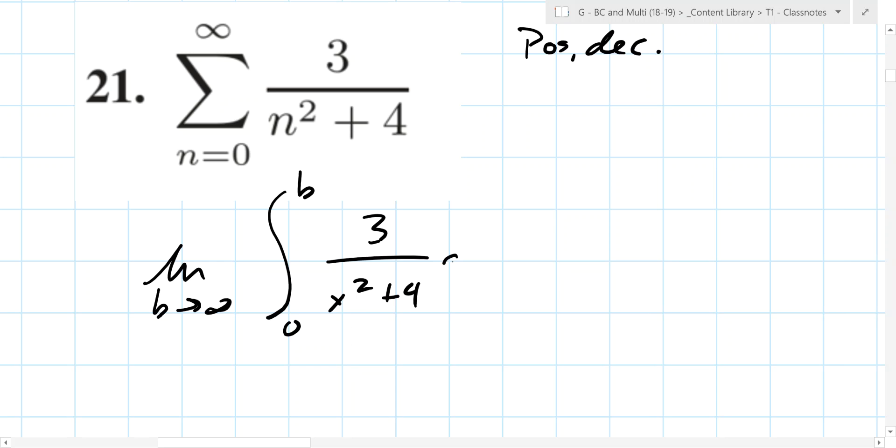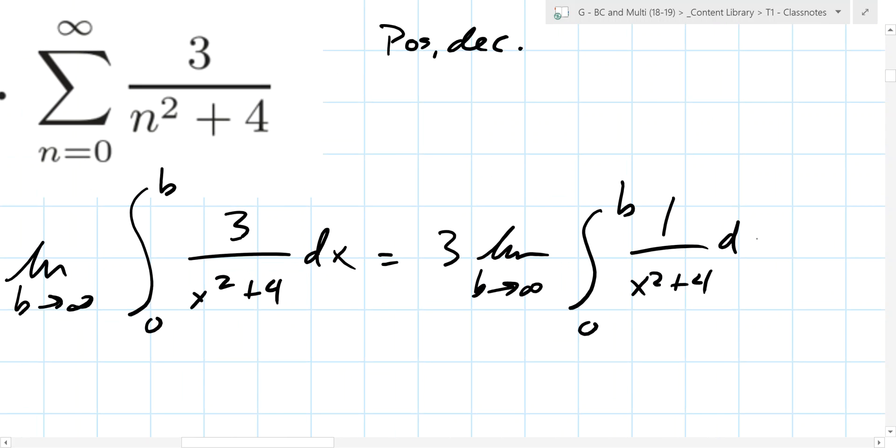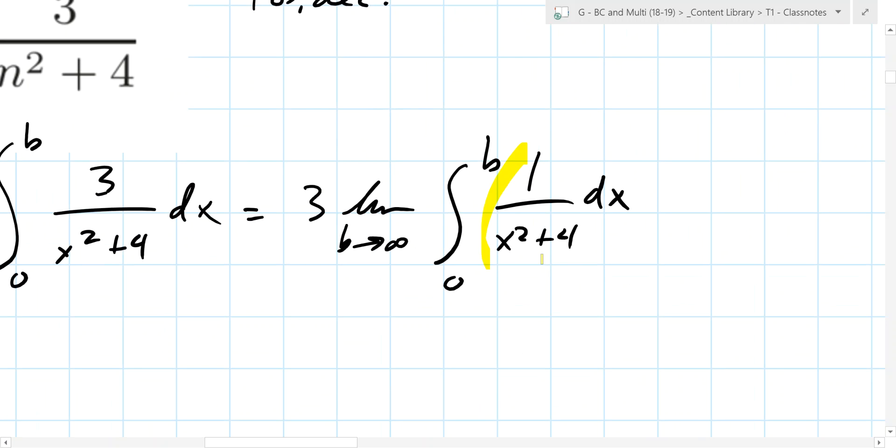For this one, what I highly recommend you do—let's just make it because we like to write x's—do all the easy stuff first, like take out easy stuff. What's one easy thing we could do to make this easier? Yeah, three times the limit as B goes to infinity of the integral from 0 to B of 1 over x squared plus 4 dx. This is where you need to recognize something. This kind of looks like something. What does it kind of look like? It looks like the derivative of arctan, right?